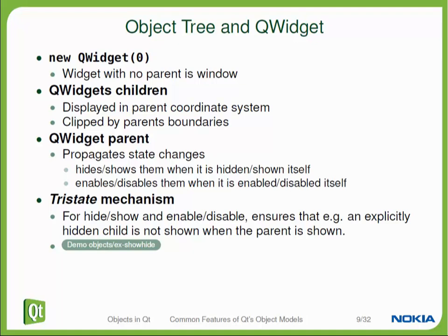These children are all shown within the coordinate system of the parent. So if you create a push button as a child of your widget and you move it to position 0,0, it will show up in the upper left corner of your parent window, not of the desktop. If you move it further away, the child widget will be clipped by the window of the parent. The parent will then propagate state changes down to its tree of children. For example, if you disable or gray out the parent window, all buttons and labels within that window will be disabled as well. The same is true for hiding and showing a window — all these state changes are propagated automatically down the QWidget tree.